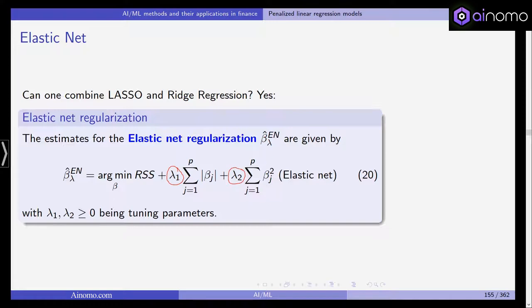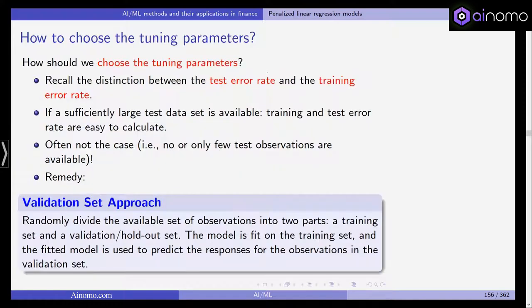The elastic net overcomes some of the shortcomings of both the Lasso and the Ridge regression. Later in the application we'll see all three — Lasso, Ridge regression, and the elastic net. Now the question we haven't addressed is how to choose the tuning parameters for the Lasso, the Ridge regression, and the elastic net.